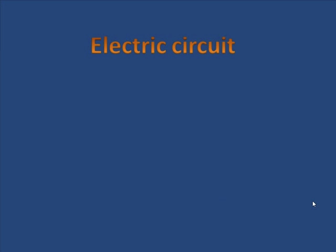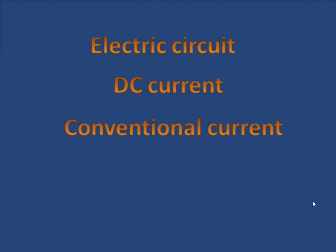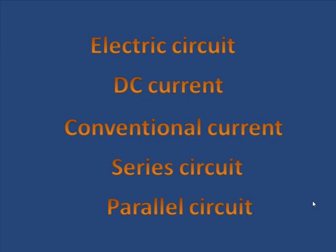So you need to know the definition of an electric circuit: a path for charges to follow. DC current flows in one direction only. Conventional current flows from positive to negative, flow of positive charge. A series circuit has only one path for the charge. Parallel circuit has more than one path for the charge.